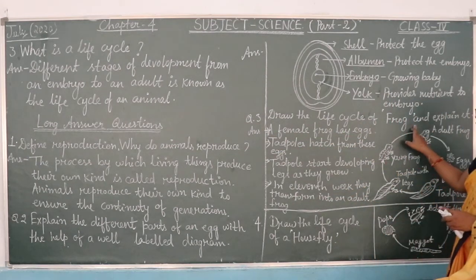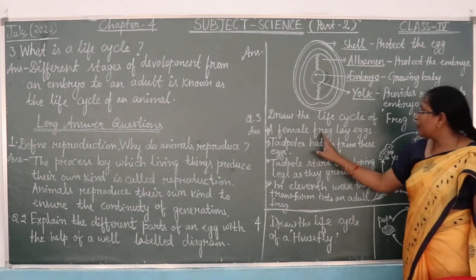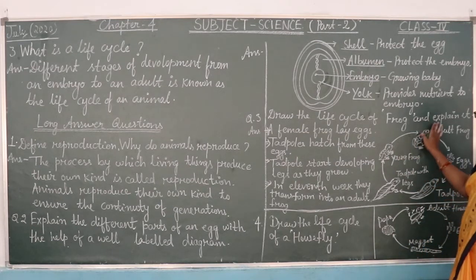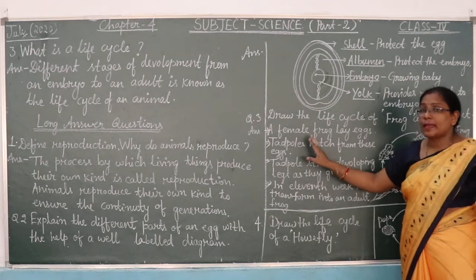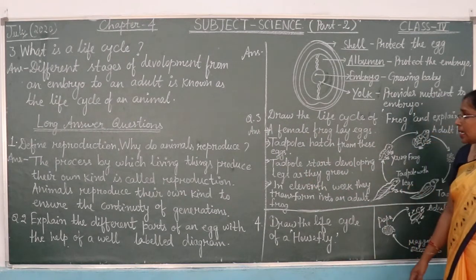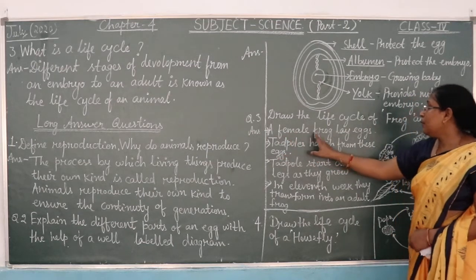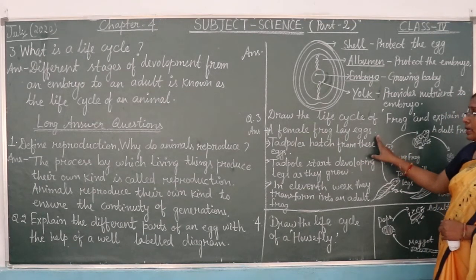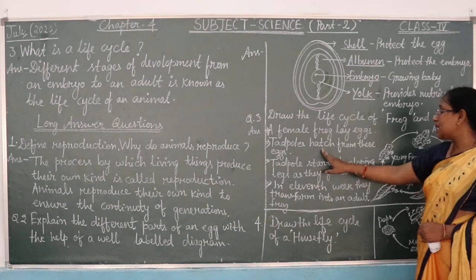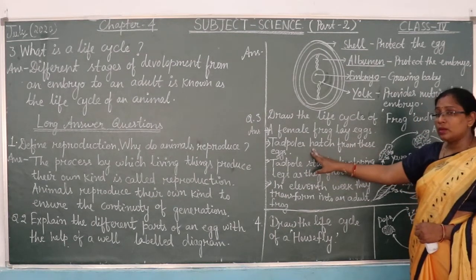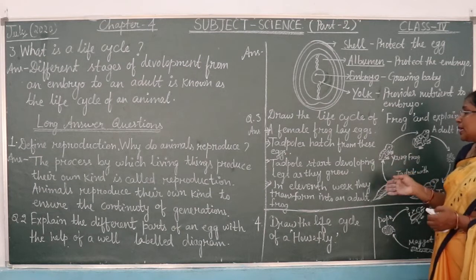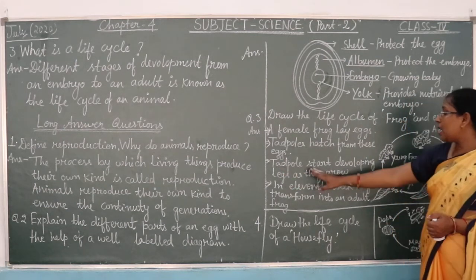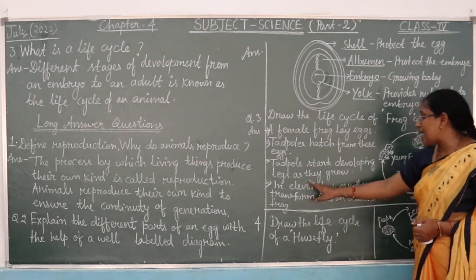Question number 3: draw the life cycle of a frog. First, the frog lays eggs. Then tadpoles hatch from these eggs. The tadpoles hatch and then start developing legs as they grow.